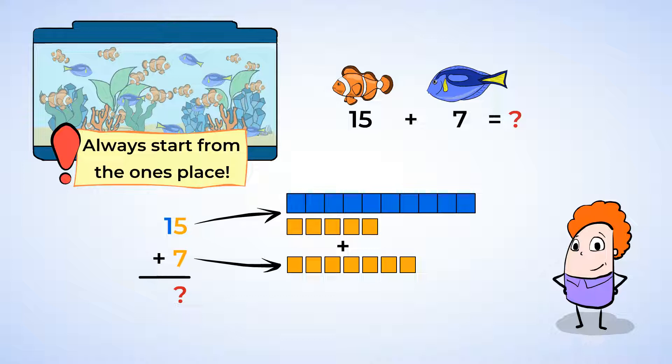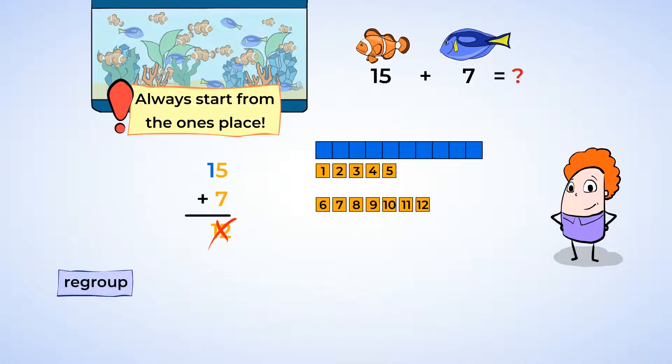Now let's start by counting the unit cubes. There are 12 unit cubes, but these unit cubes represent the ones, and you can't put a 12 in the ones place. It has a group of 10 in it. So you need to regroup.